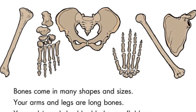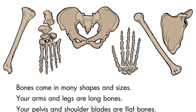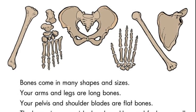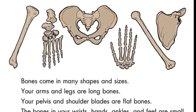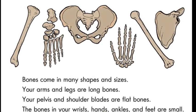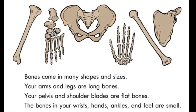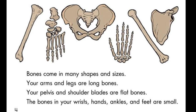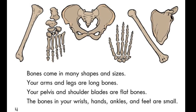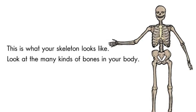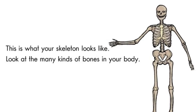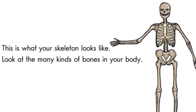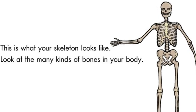Your arms and legs are long bones. Your pelvis and shoulder blades are flat bones. The bones in your wrists, hands, ankles, and feet are small. This is what your skeleton looks like. Look at the many kinds of bones in your body.